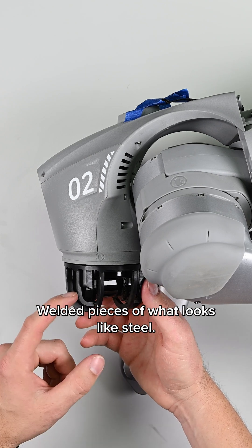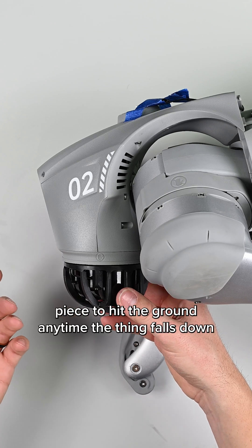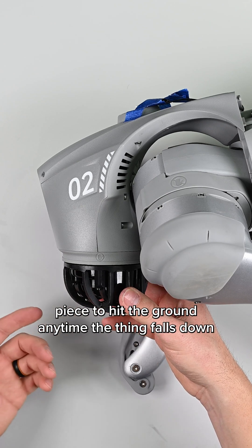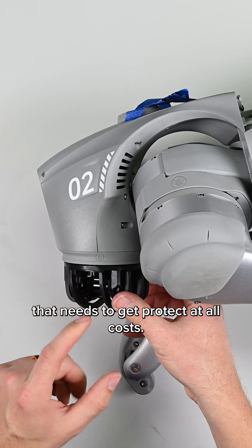Welded pieces of what looks like steel, really just because that's the first piece to hit the ground anytime the thing falls down or hits its head on anything. That needs to get protected at all cost.